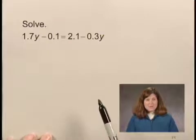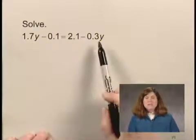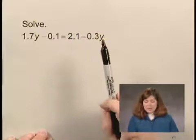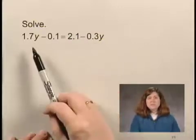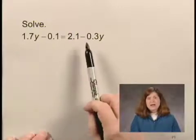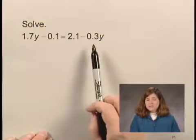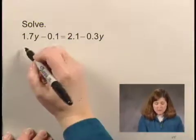Now, we look carefully and we see that there are two terms containing y, and we need to have both of those terms combined. So I'm going to add 0.3y on both sides of the equation.